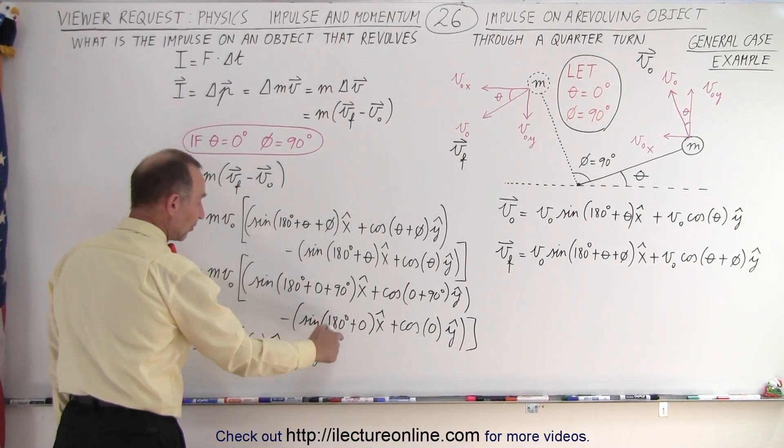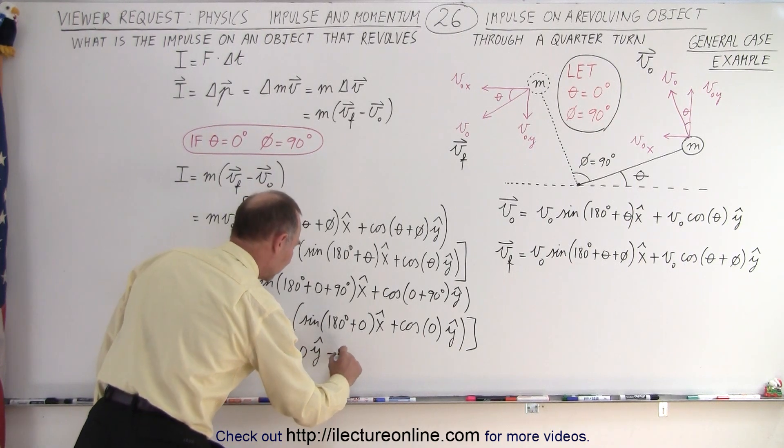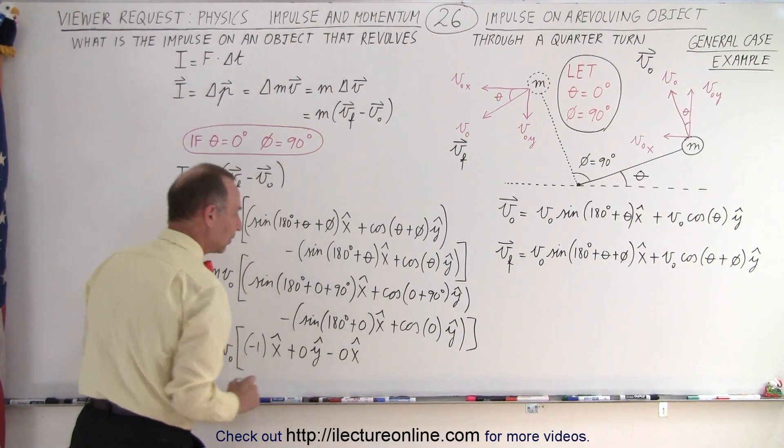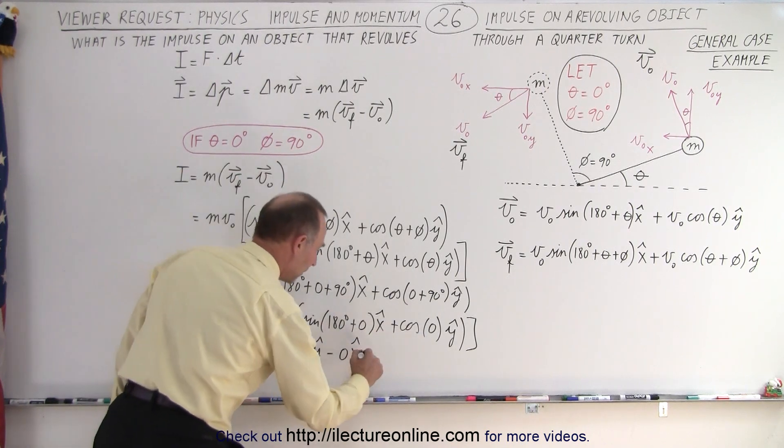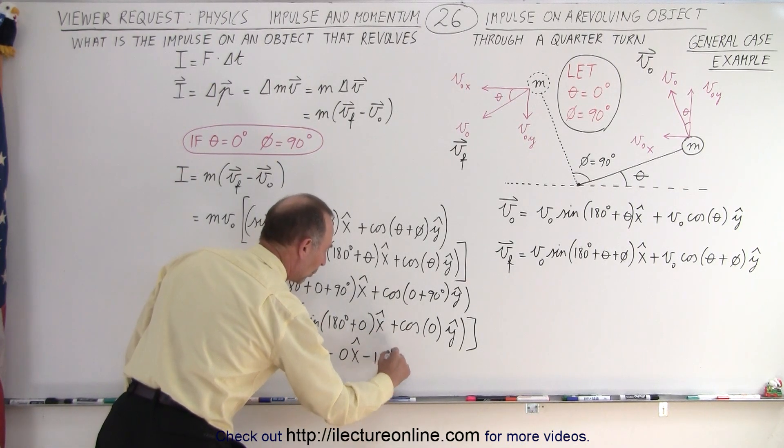so that would be plus 0 in the y direction. The sine of 180 is 0, so that would be minus 0 in the x direction. And the cosine of 0 is 1, but times the negative would be minus 1 times the y direction.